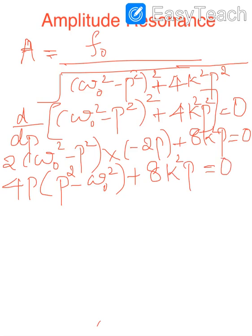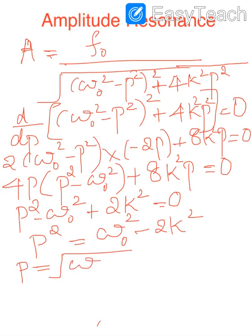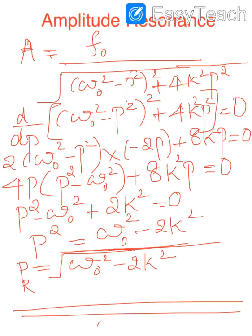Both terms have a common factor of 4p, which cancels. This gives: p² − ω₀² + 2k² = 0, so p² = ω₀² − 2k². We denote this value as pᵣ², where pᵣ is the resonant or resonance frequency. Therefore, the resonant frequency is pᵣ = √(ω₀² − 2k²), where ω₀ is the natural angular frequency and k is the damping factor.